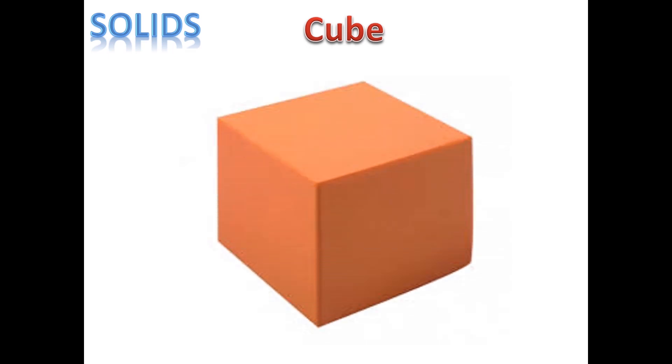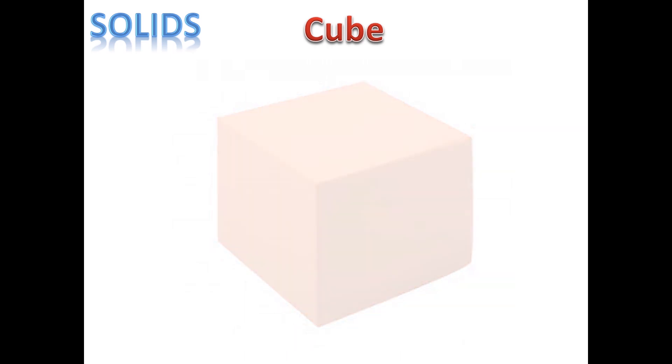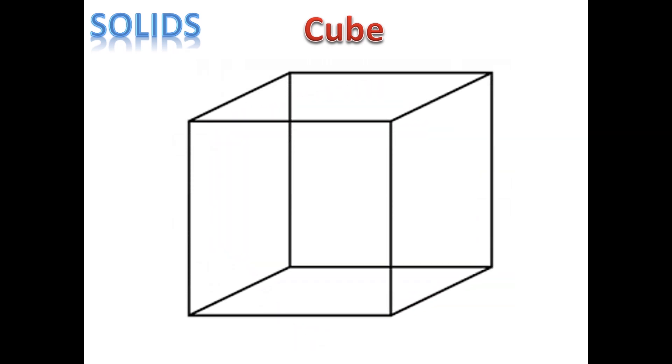This is a cube. A cube has vertices. Let us see how many vertices a cube has: 1, 2, 3, 4, 5, 6, 7, and 8.